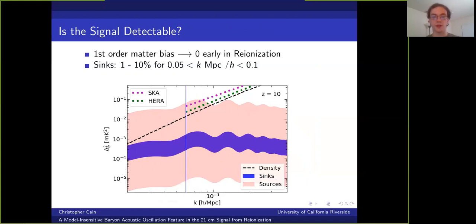While the source term may be much larger or much smaller than this, depending on highly uncertain source parameters. So because the sinks term is so tightly constrained compared to the source term, it provides a kind of rough lower bound on the amplitude of the expected BAO feature.